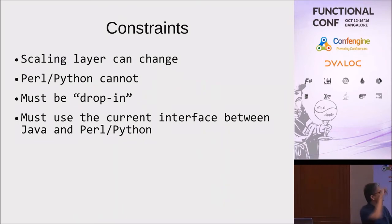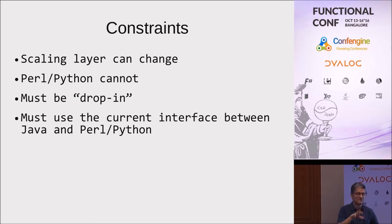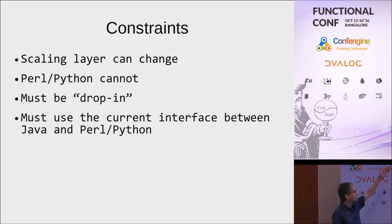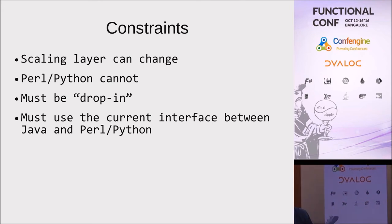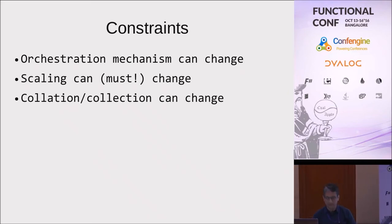So what are the constraints specific to this problem? I can change the scaling layer — that's not a problem. Perl and Python, however, we have significant investment in, and you cannot change the structure. It has to be a drop-in solution: whatever Perl and Python code we have today should run with the existing system without requiring any change. There is also the way Java talks to Perl and Python that must be maintained. So orchestration can change, scaling can change, collation and collection — all these things can be changed.